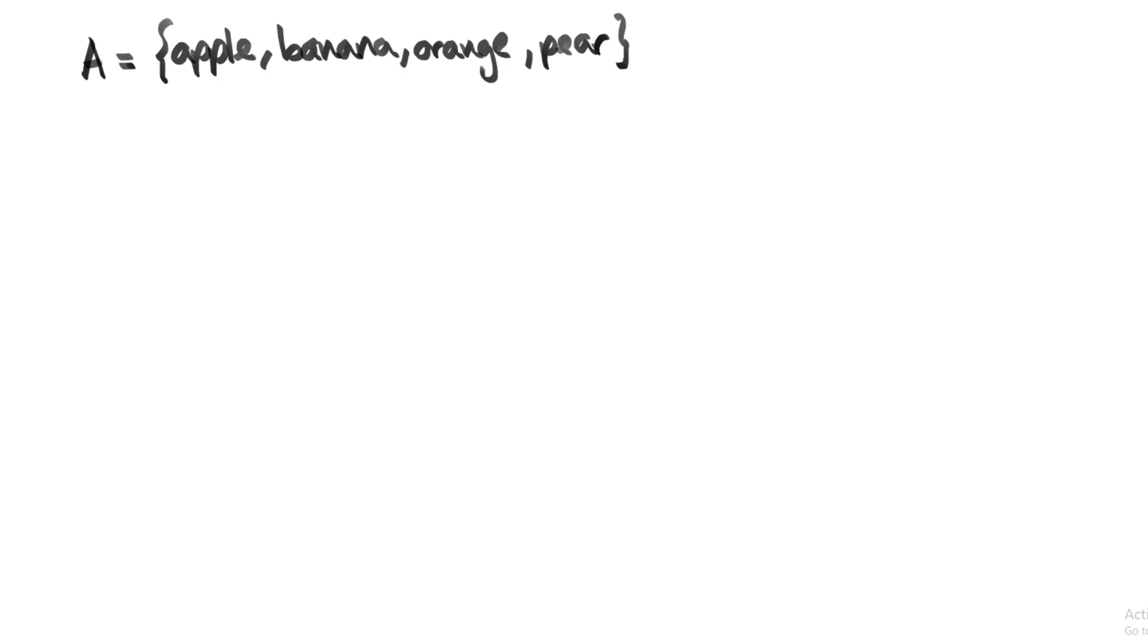An object inside a set is called an element of that set, so apple is an element of set A, or we can say apple is a member of set A. The Greek symbol epsilon is used to indicate is a member of. The size of set A is simply the number of elements it contains, so in this case the size of A is four.